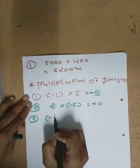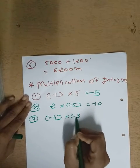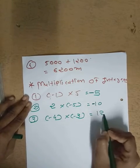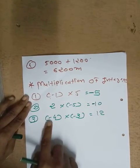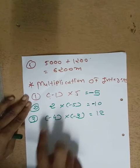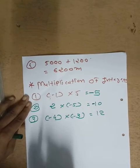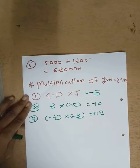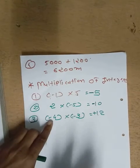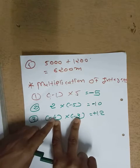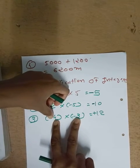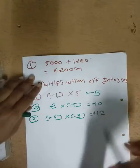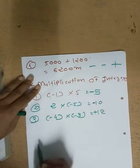Number three: minus four multiply by minus three. First of all, simple multiplication — four threes are twelve. Here there are two numbers, and both numbers are negative. So minus minus, we get plus. Minus minus, we get plus twelve. Minus four and minus three — both numbers are negative, so minus minus becomes plus.